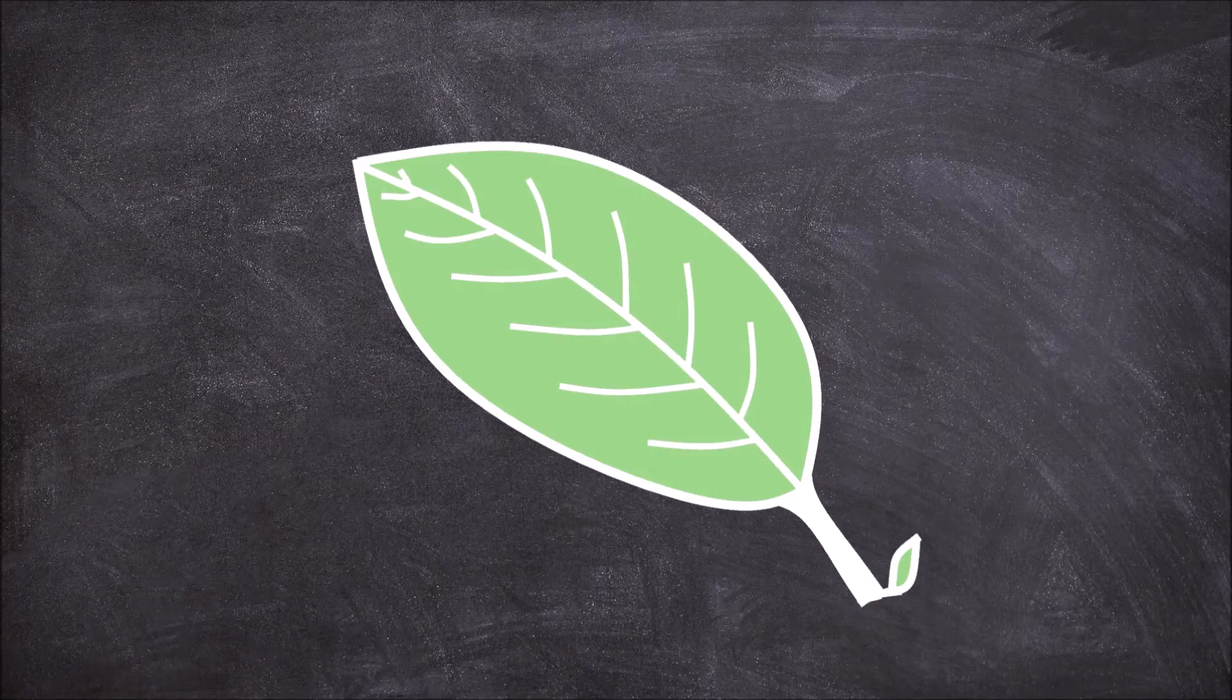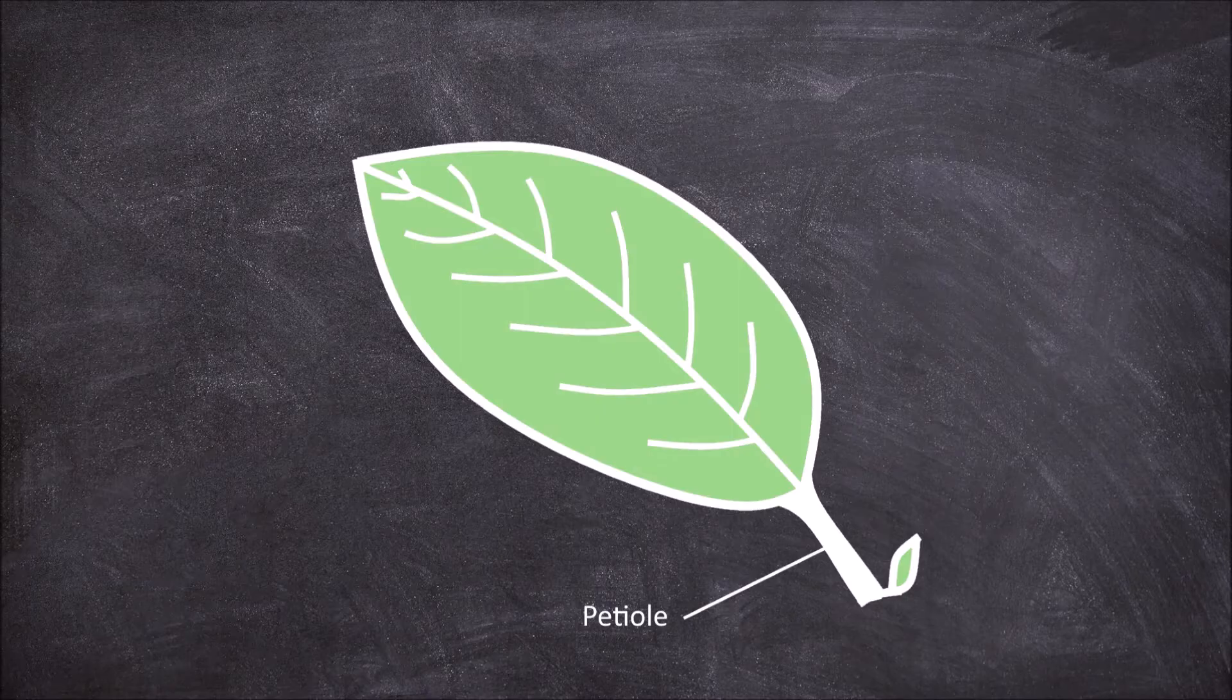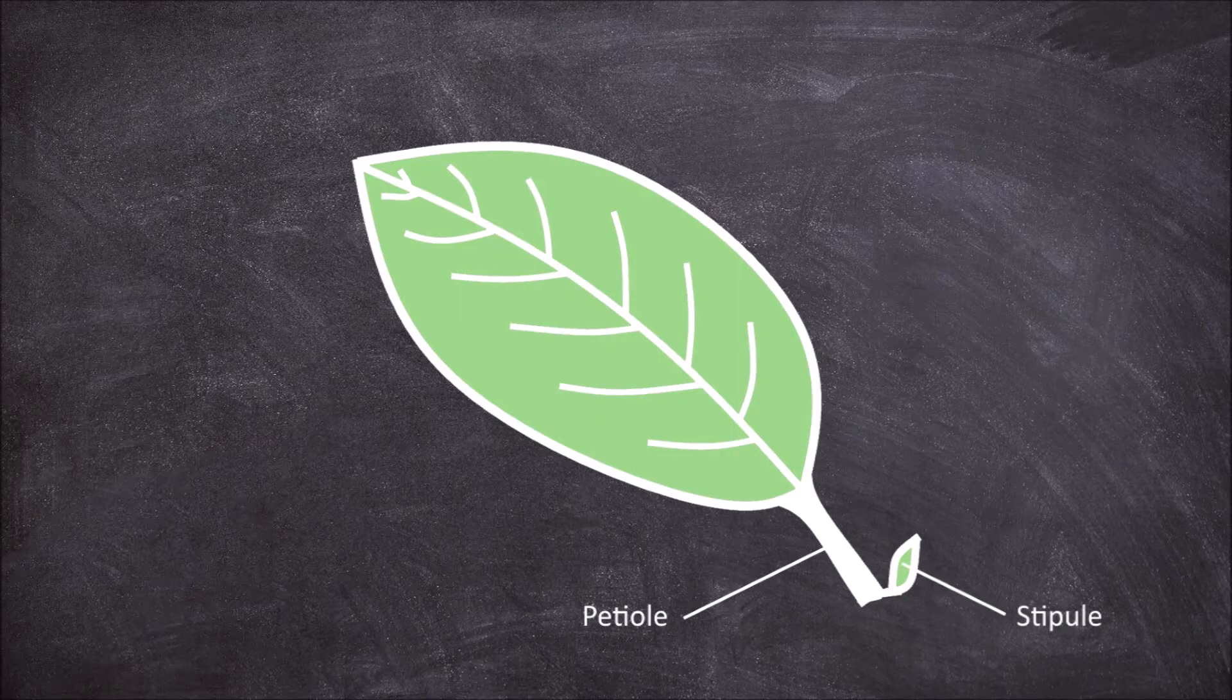In this video we are going to go over the external anatomy of a leaf. The leaf consists of the petiole. This is the stalk that attaches the leaf to the plant stem. At the base of the petiole there can be leaf-like appendages called stipules.